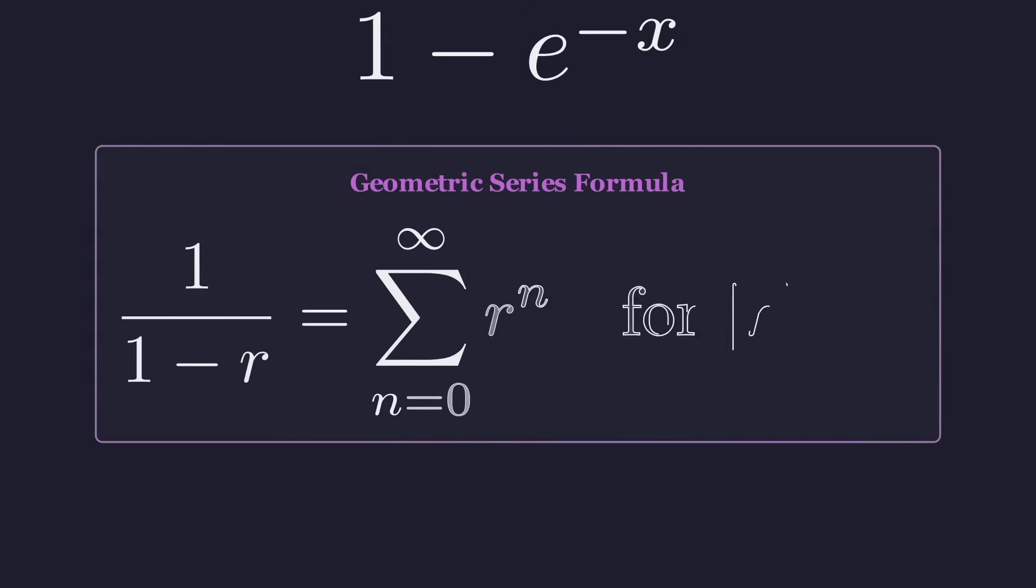Here's a formula you might remember: 1 over 1 minus r can be written as an infinite sum of r to the n, where n starts at 0 and goes to infinity. This works as long as the absolute value of r is less than 1. Our expression has exactly this pattern, where r is e to the negative x. And here's why this works.